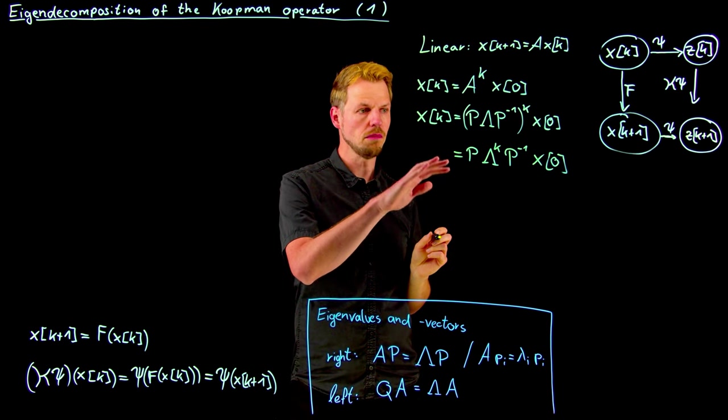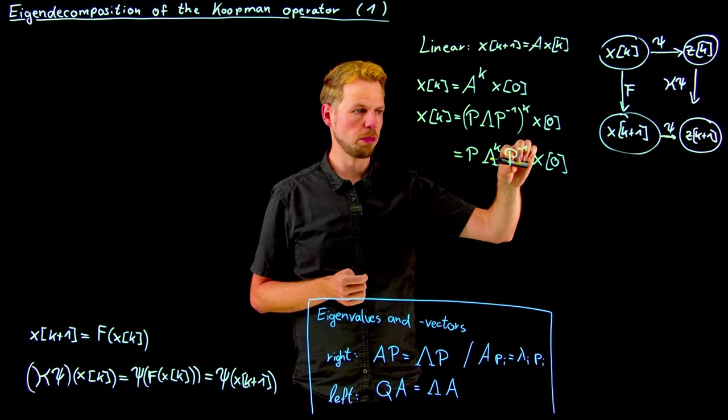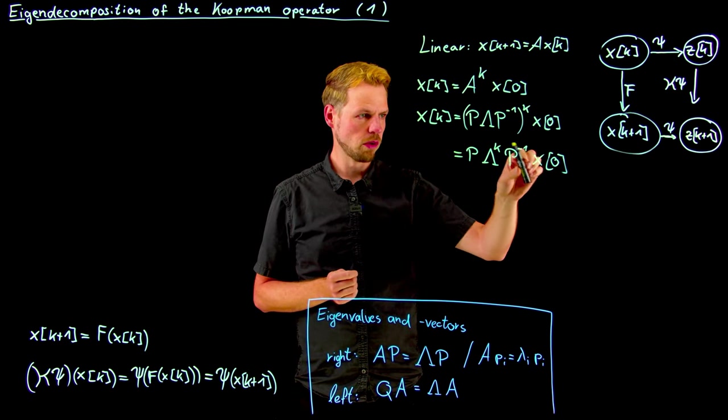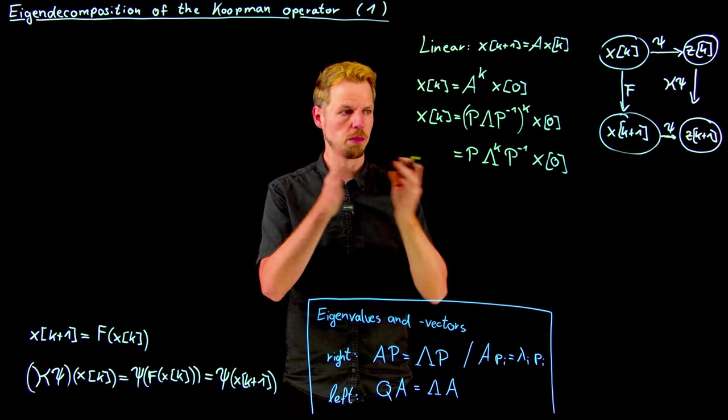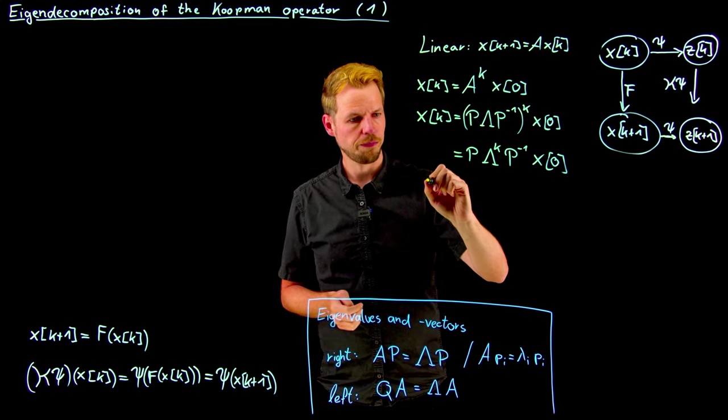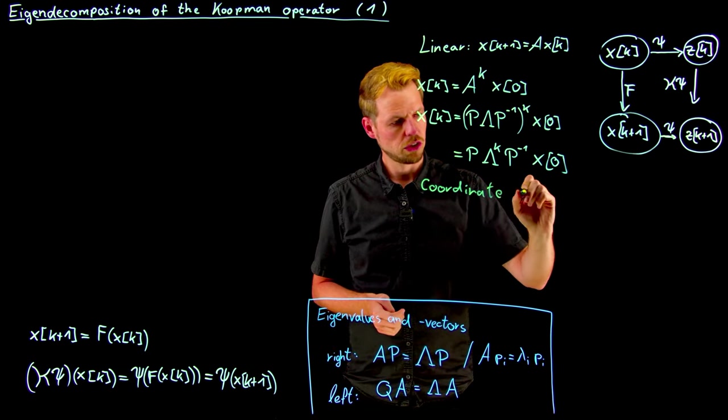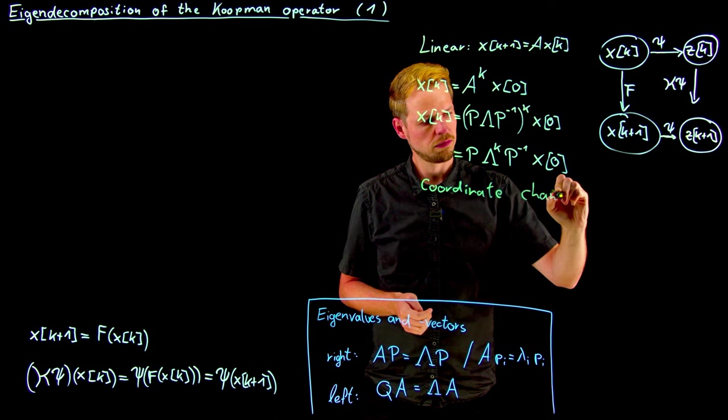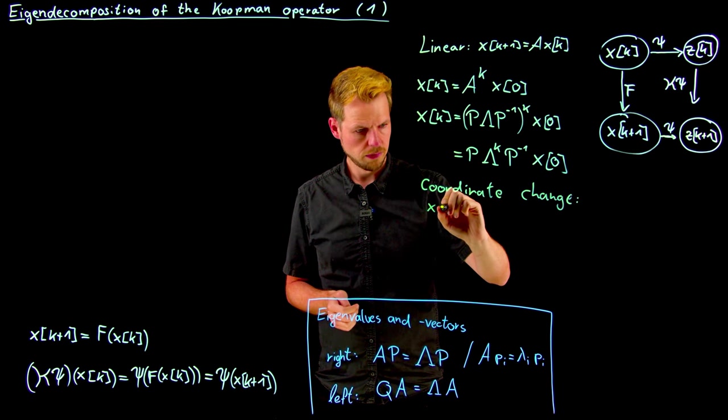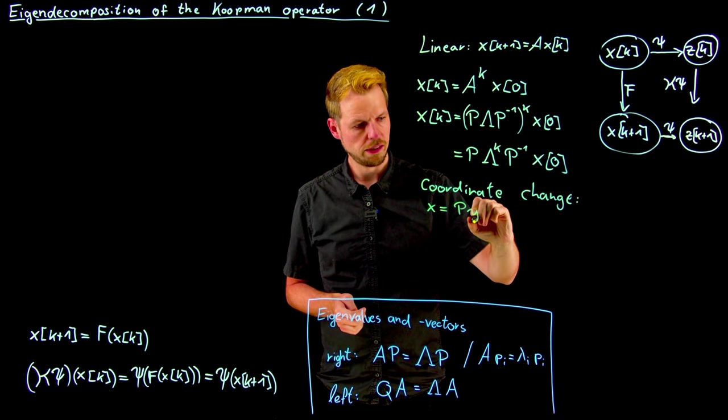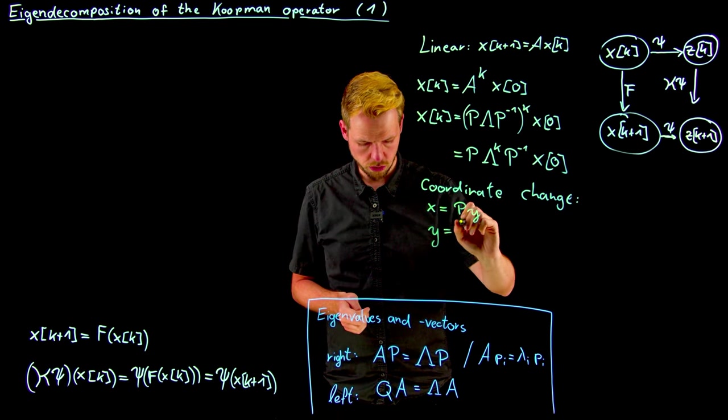So what we see here is a new system, identical to the one before. And what we can now do is we can use our P matrix to introduce new coordinates. So it's a linear system, so we can simply change the basis if you wish. So we do a coordinate change and define x to be P times a new state y, or the other way around, y is equal to Q times x.